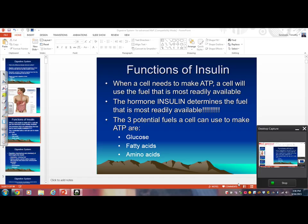First of all, when a cell needs to make ATP, when a cell needs to make energy, it uses the fuel that's most readily available. So insulin is really the big dog in dictating what fuel you use to make ATP inside your cells. There's three potential fuels you can use: you can use glucose, you can use fatty acids, or you can use amino acids.